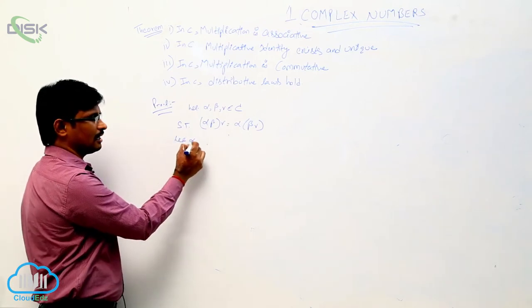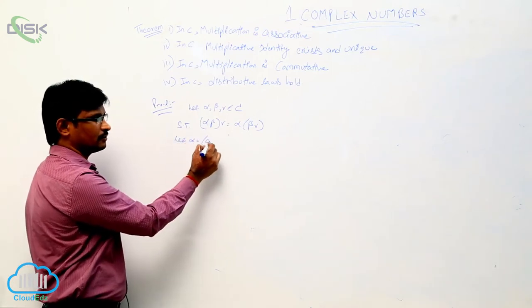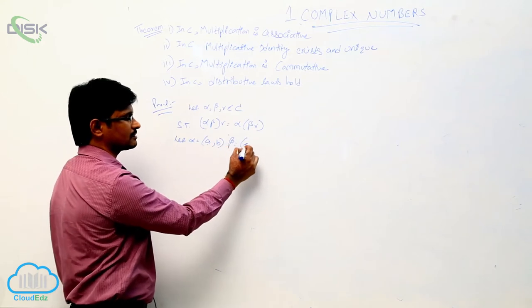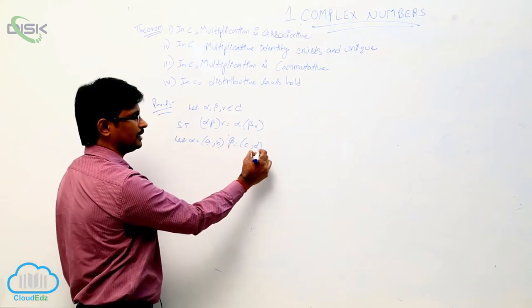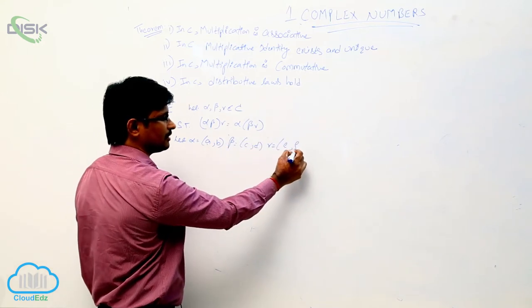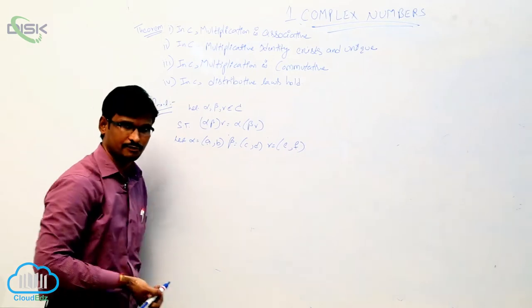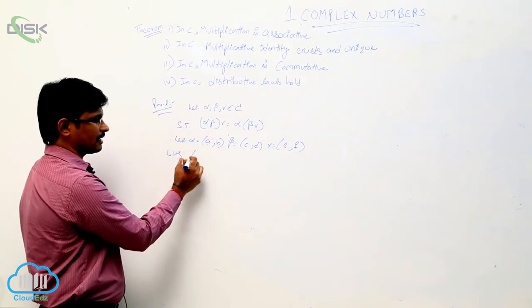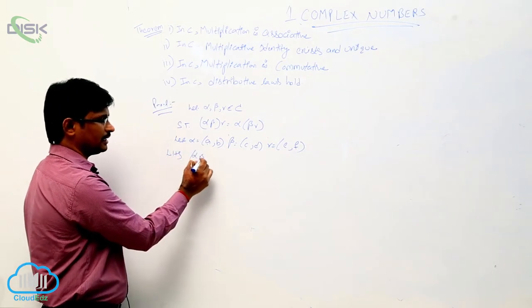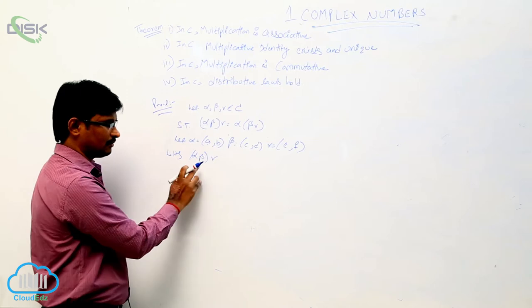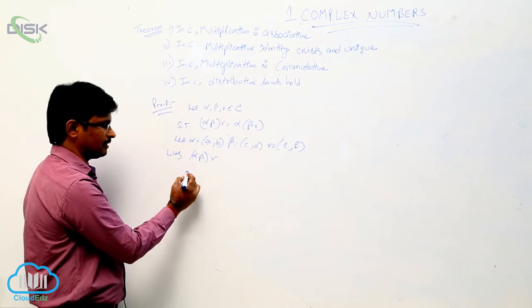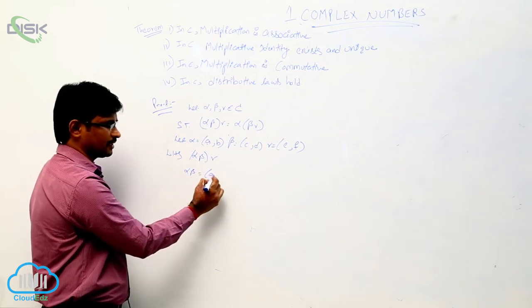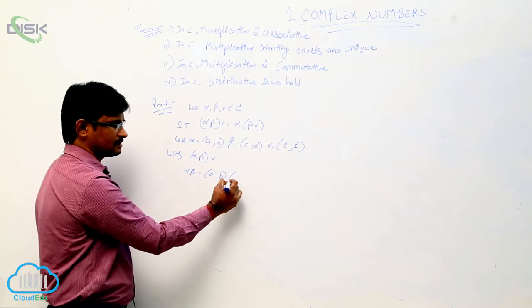Let alpha equal to (a, b), and beta equal to (c, d), and gamma equal to (e, f). So, for finding alpha beta into gamma, first we will find out the value of alpha beta. Alpha beta equals (a, b) into (c, d).